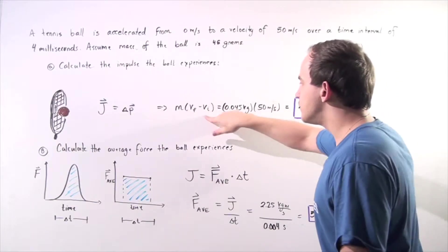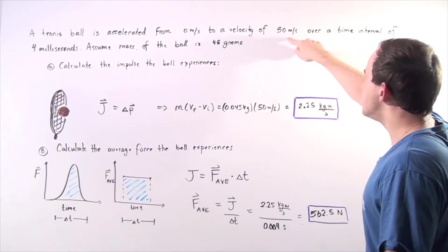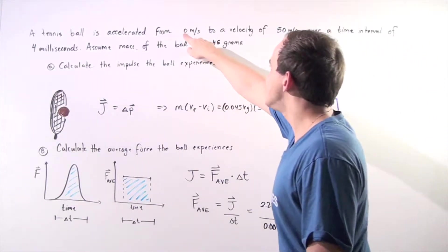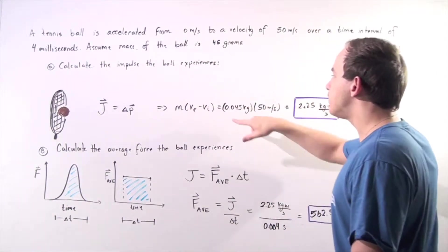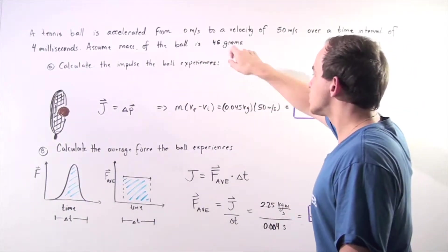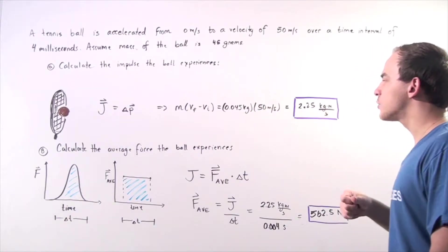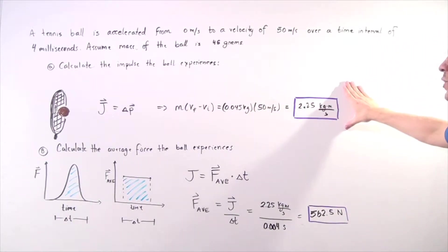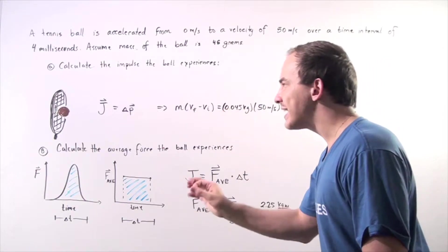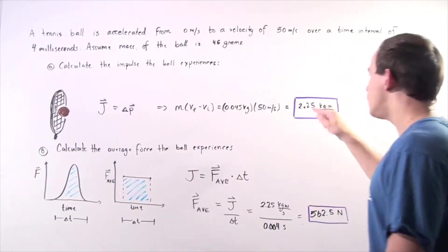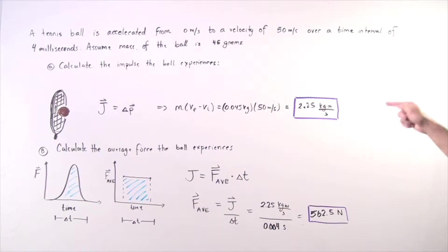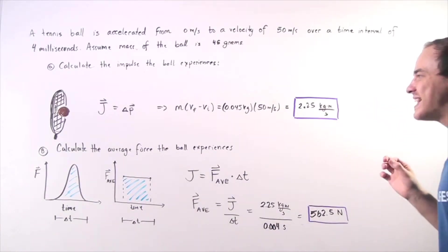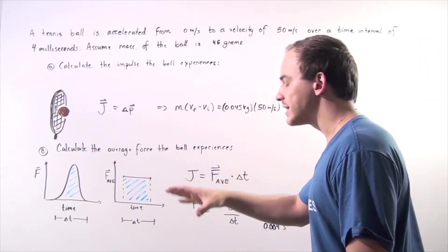Our change in velocity is simply 50 meters per second minus zero meters per second, multiplied by the mass in kilograms — 0.045 kilograms. We get the following impulse: the tennis racket imparts an impulse of 2.25 kilograms times meters divided by seconds on the object.